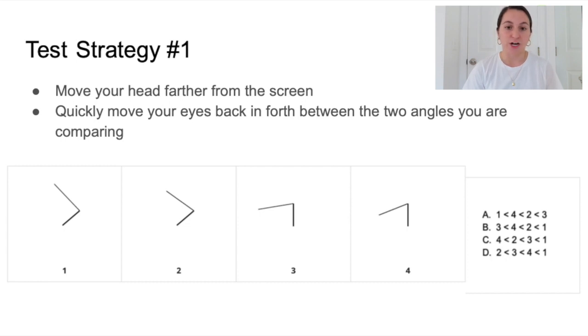So first try moving your head back from the screen and then move your eyes between the two angles, focusing on the inner angle very quickly. With practice this will become easier and easier. So if you do this you can hopefully tell that 4 is smaller.